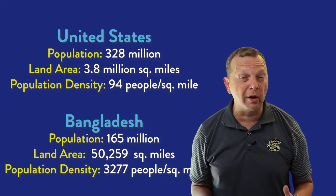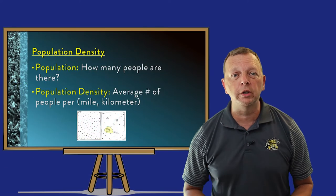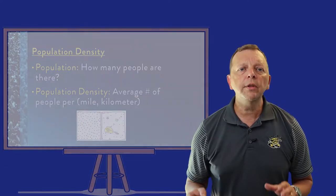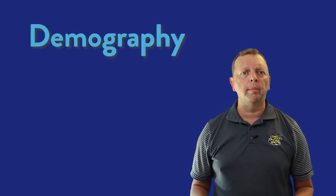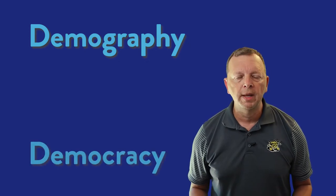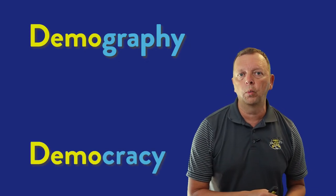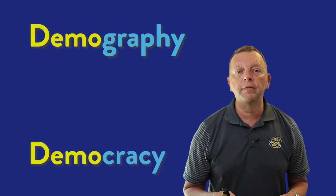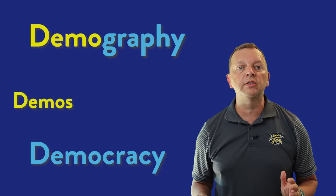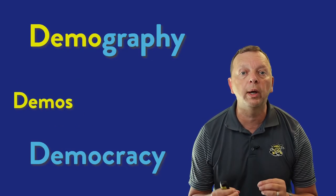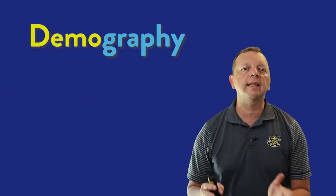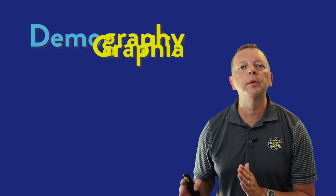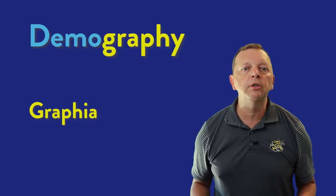So while the United States has a population density of 94 people per square mile, the population density in Bangladesh is an astounding 3,277 people per square mile — Bangladesh is really crowded. The study of populations is called demography. The word demography is very similar to democracy; the first portion of both words comes from the Greek word 'demos,' which means people.